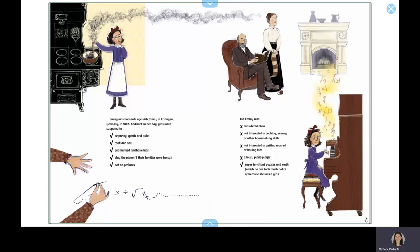But Emmy was considered plain, not interested in cooking, sewing, or other homemaking skills, not interested in getting married or having kids, a lousy piano player, super terrific at puzzles and math, which no one took much notice of because she was a girl.